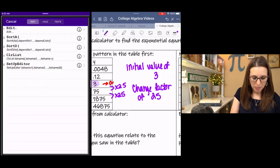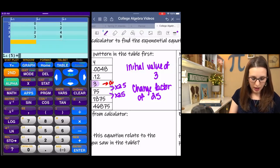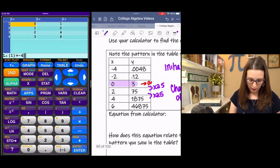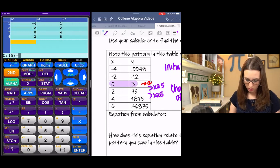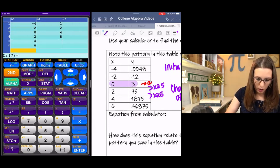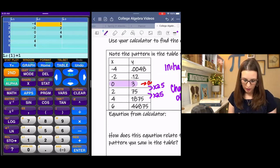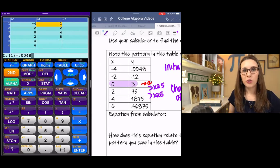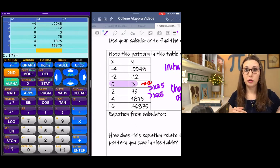I'm going to go to Stat, Edit, and I'm going to input my x values in L1. My x values given are negative 4, negative 2, 0, 2, 4, 6. And then my y values are going to go in L2. That's 0.0048. And when you get it all finished, it should look something like this. It needs to mirror our table of values given.